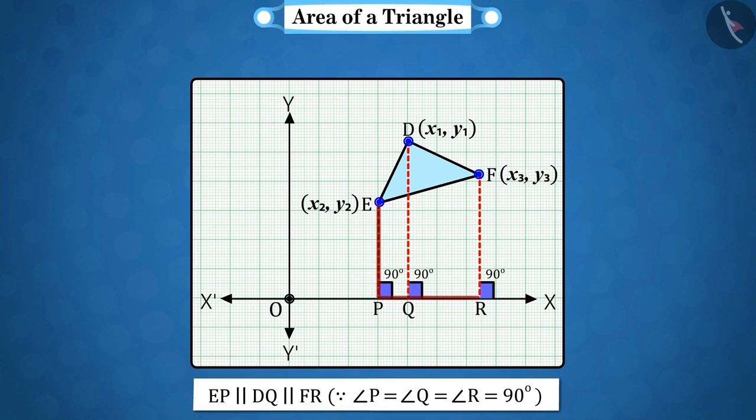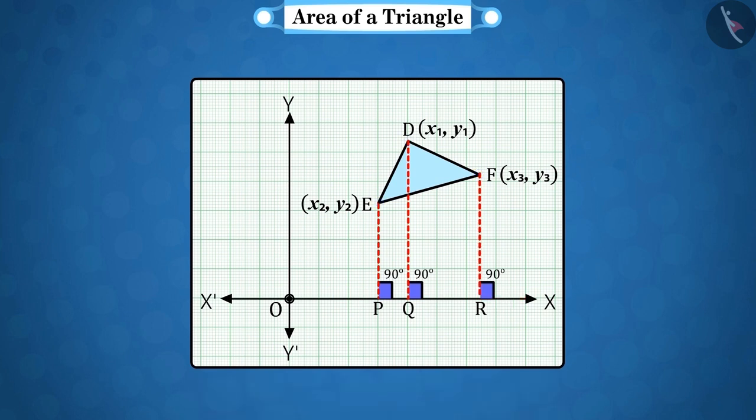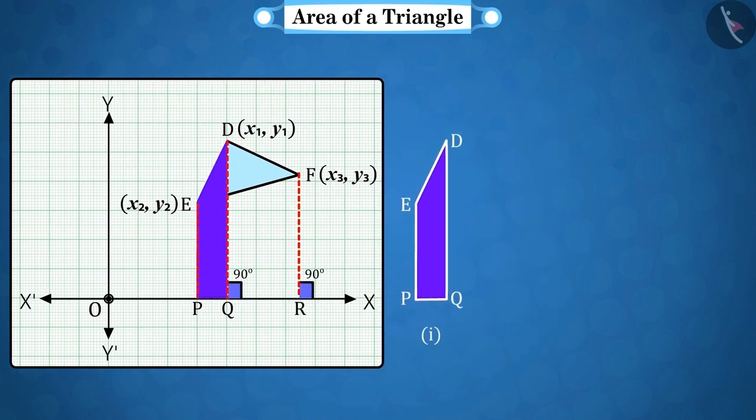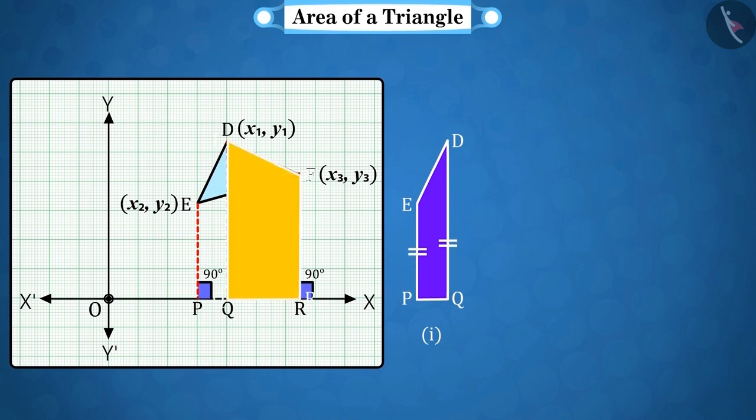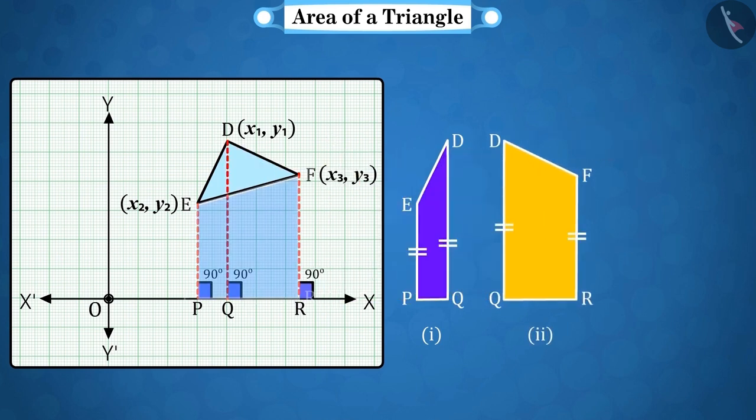And the angles EPR, DQR and FRx are equal to 90 degrees each. If we talk about DEPQ, then it is a trapezium. Because we know that if the opposite sides of a quadrilateral are parallel then it is called a trapezium. Similarly, DQRF and EPRF will also be trapeziums.